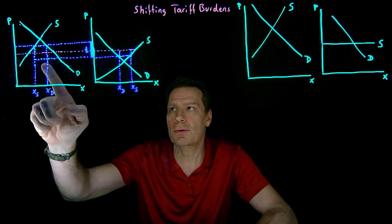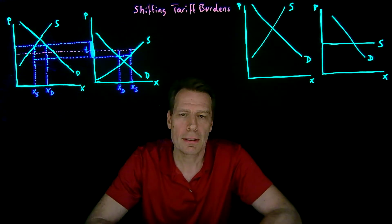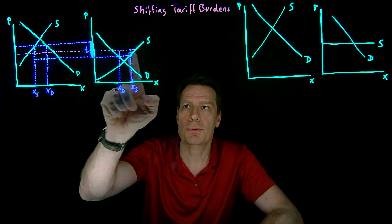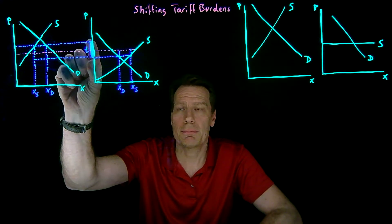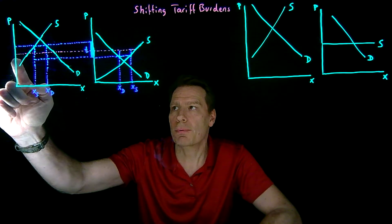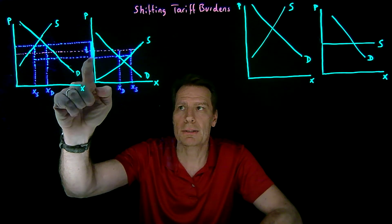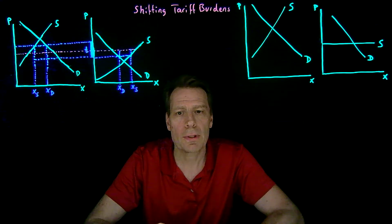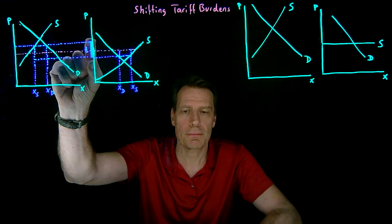So here, for example, we have a country that's importing and a country that's exporting. In the absence of a tariff, there's a single price that emerges across the two countries. When a tariff of size T per unit is imposed, it'll cause the price in the importing country to rise and the price in the exporting country to fall. The difference in those prices will end up being exactly equal to the per-unit tax of the tariff.